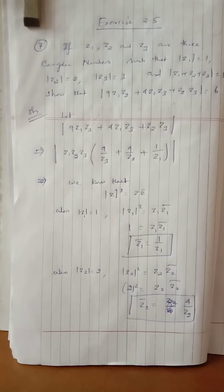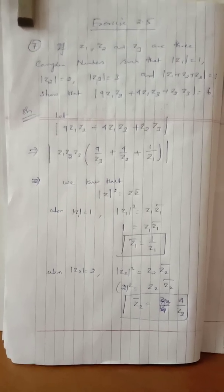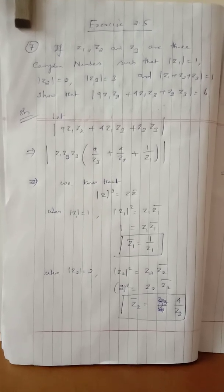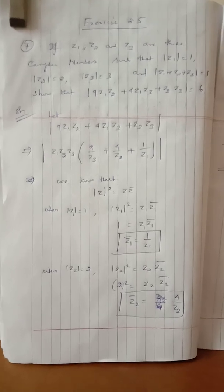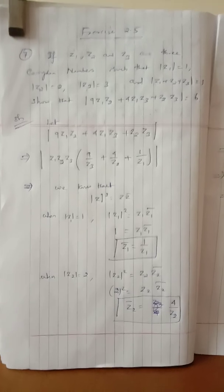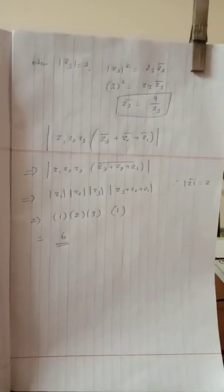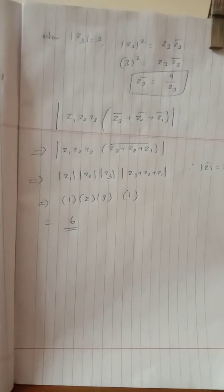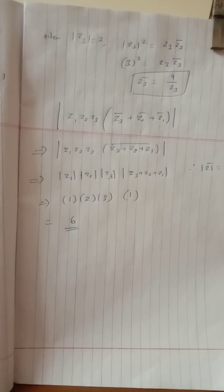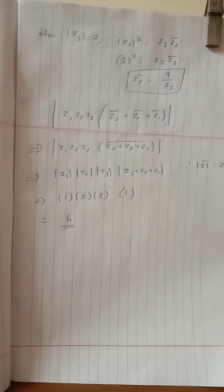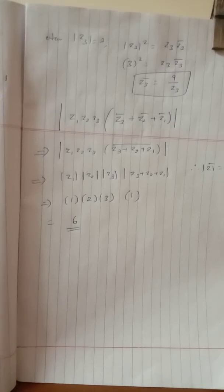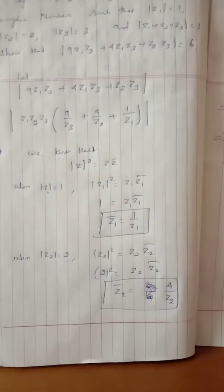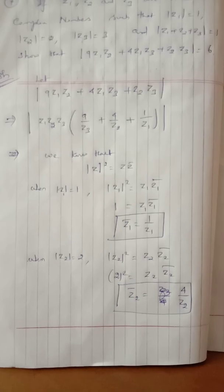Using the properties: Z2 times Z2 bar equals modulus of Z2 squared equals 4, so Z2 bar equals 4 by Z2. Similarly, Z3 times Z3 bar equals modulus of Z3 squared equals 9, so Z3 bar equals 9 by Z3.